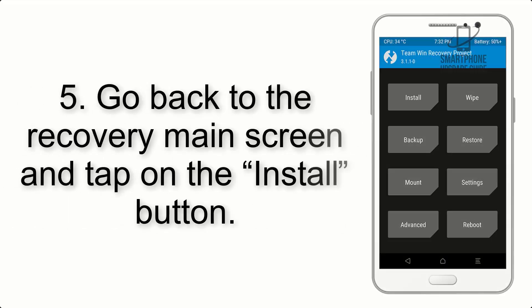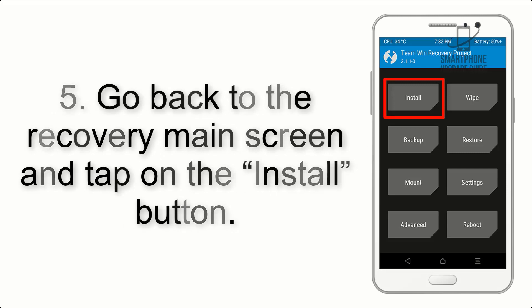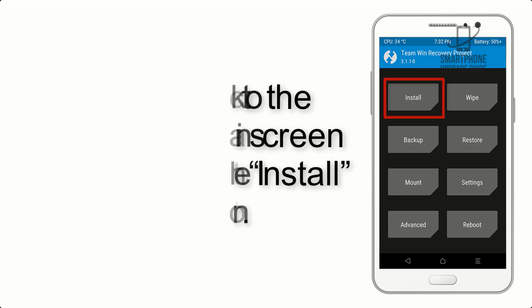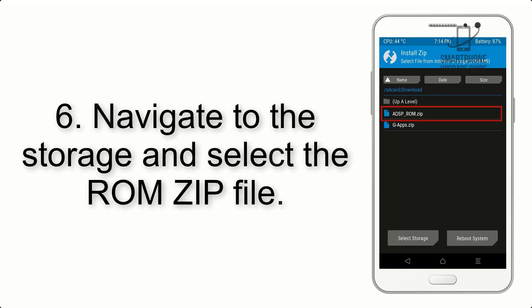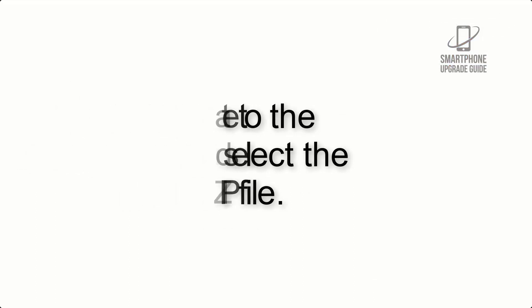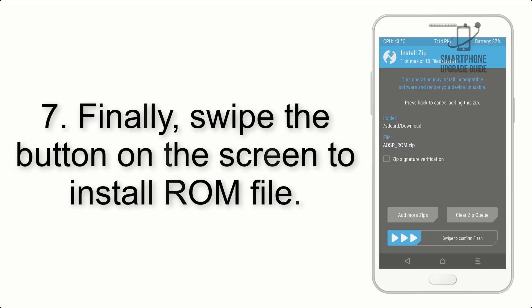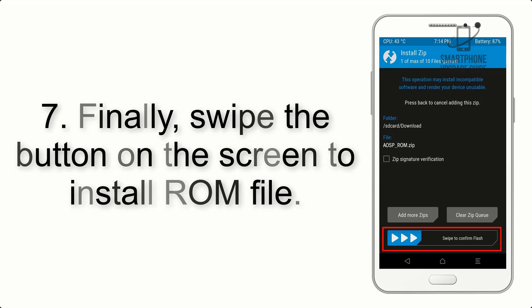Step 4: Swipe the button to wipe the device. Step 5: Go back to the recovery main screen and tap on the Install button. Step 6: Navigate to the storage and select the ROM zip file.